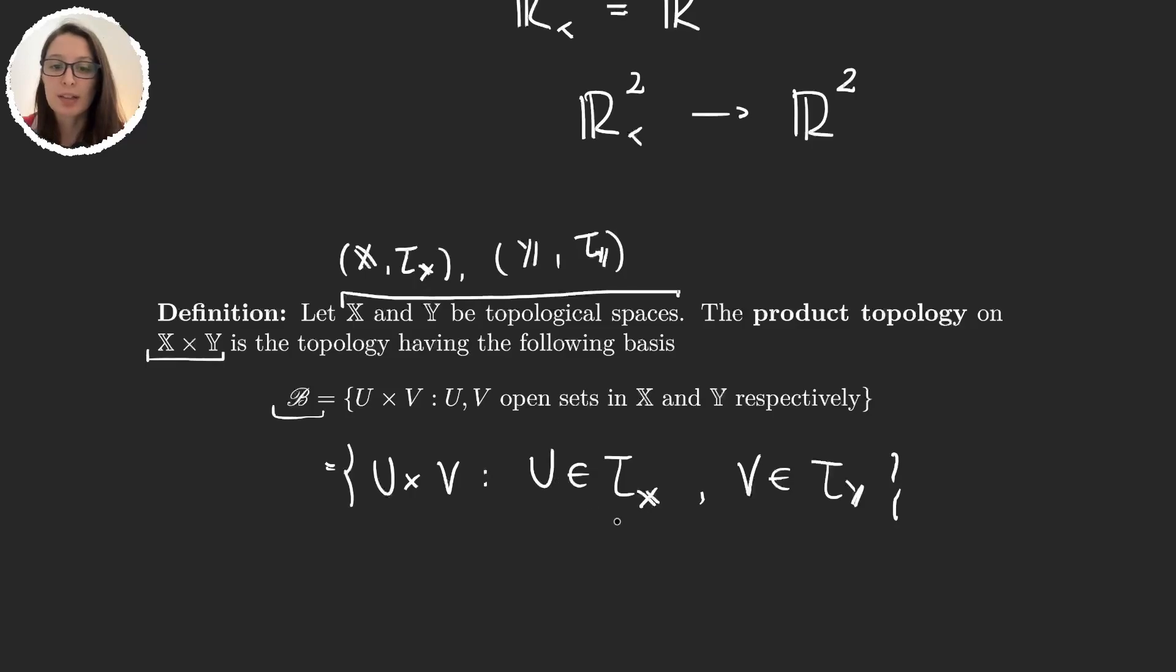If you look at this, it might seem like it's a bit more complicated than just taking products of open intervals, because we are actually taking u and v elements in the topology. So in the real line, u and v could be way more complicated than just an open interval. However,